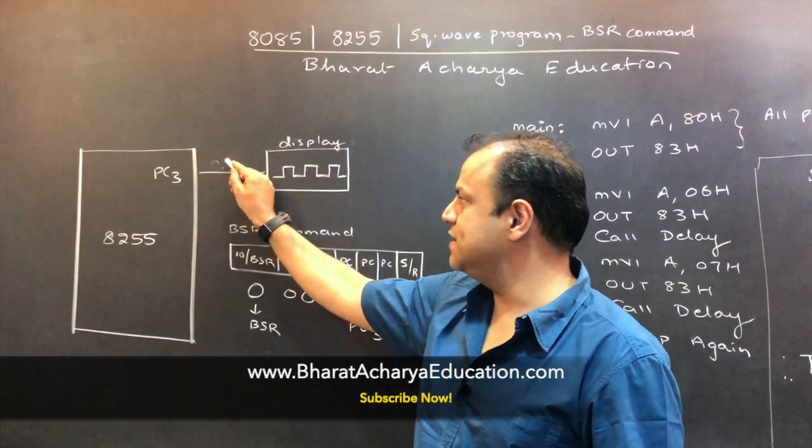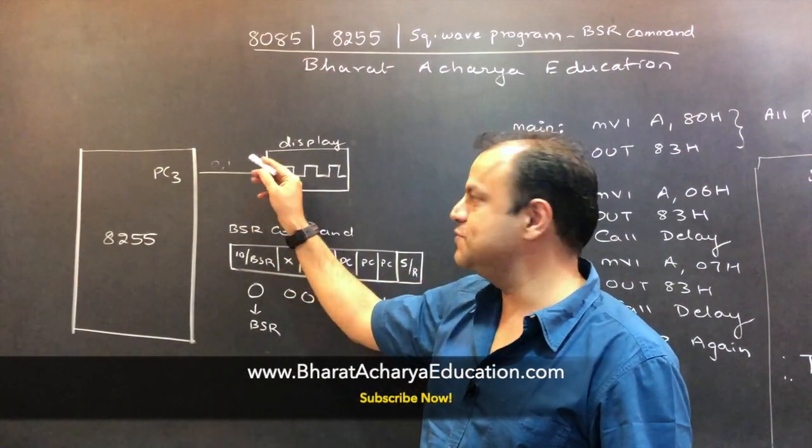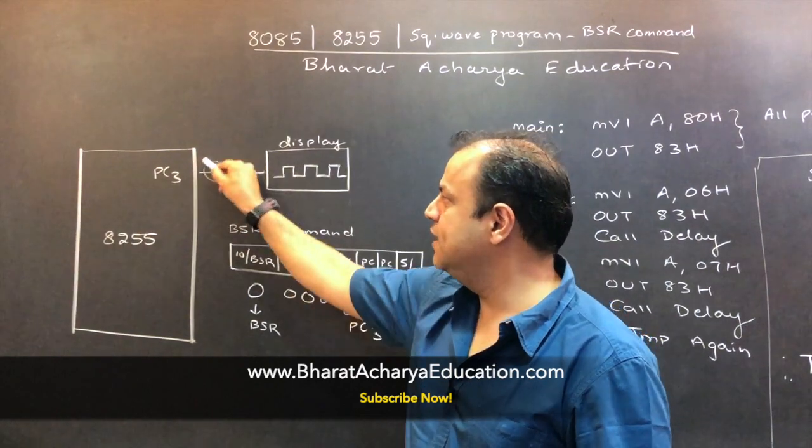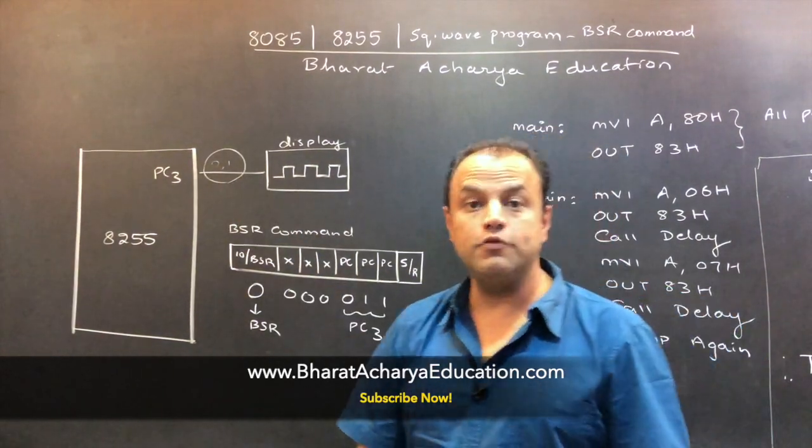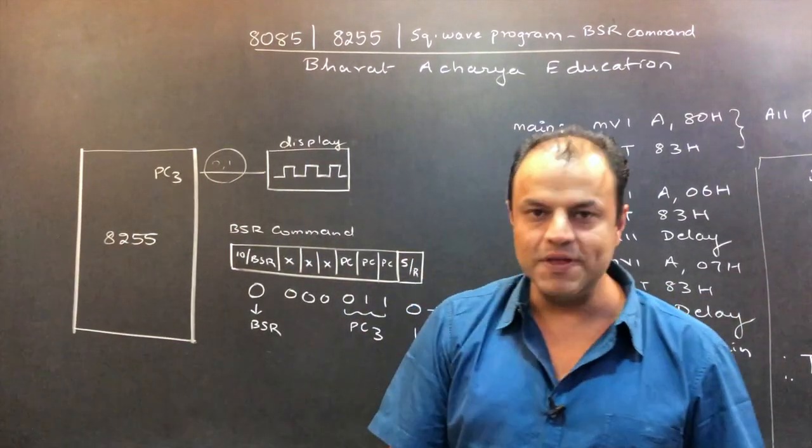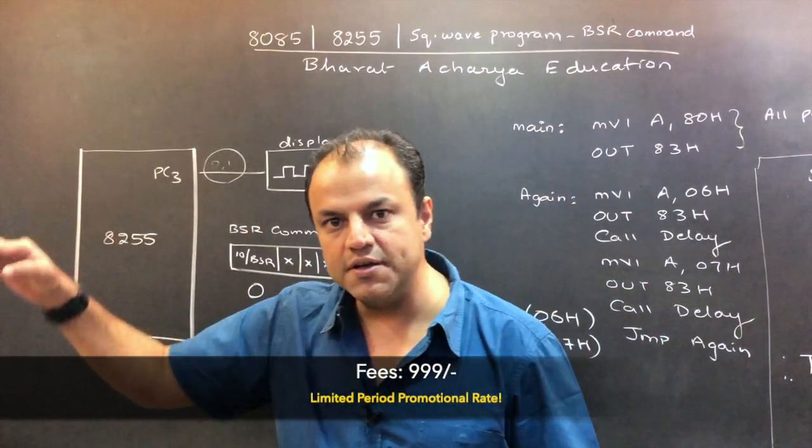Now to generate a square wave on this line, you first send a 0, then you send a 1, then again you send a 0, then you send a 1. That means you go on sending 0, 1 and put it in a loop. What kind of loop? Finite loop or infinite loop? Infinite loop, because you want a continuous square wave.